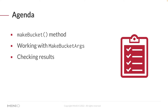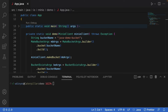In this video, we're going to be calling the makeBucket method. And in order to call that method, you need to set up some MakeBucketArgs. Additionally, we're going to take a look at how to check your results to make sure that you're actually creating a bucket when you ask for one. So let's take a look at some code.